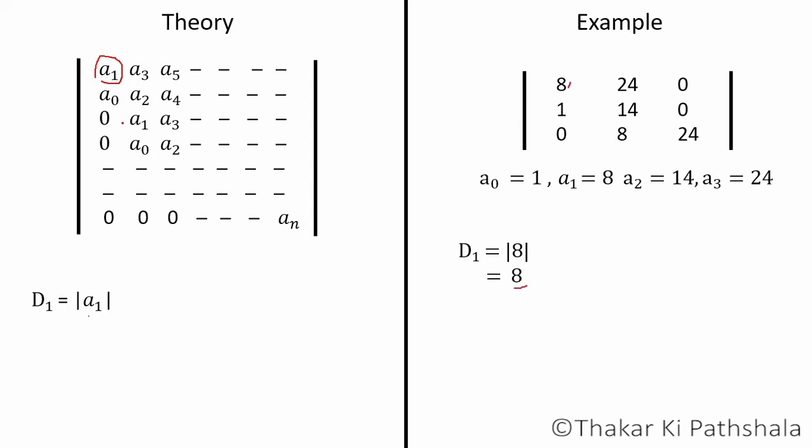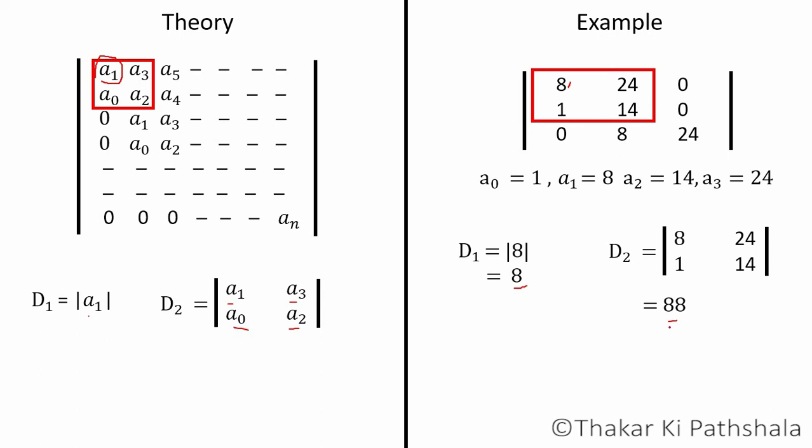Now D₂. D₂ is a 2 by 2 determinant made by encircled quantities which are a₁, a₃, a₀, and a₂. In this example, D₂ will be made up of 8, 24, 1, and 14. If you solve this, then you will get the answer 88.